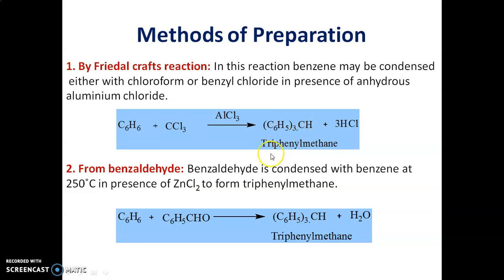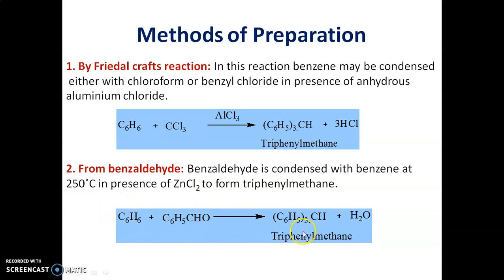It can also be prepared from benzaldehyde. By condensing benzaldehyde with benzene at 250 degrees Celsius in the presence of zinc chloride, Triphenylmethane can be obtained.